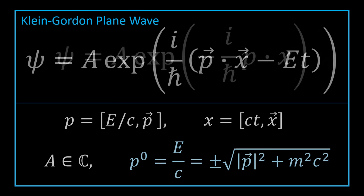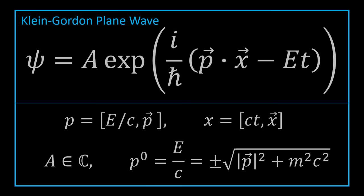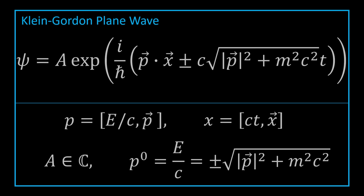Taking that dot product with the Minkowski metric and multiplying through by a minus sign, the exponential contains the three-momentum dotted with the three-position, minus the product of energy and time. We can write the energy explicitly as c times the square root of |p|² + m²c². This form will be helpful when we derive the dispersion relation, which lets us calculate the group velocity of a Klein-Gordon wave packet.